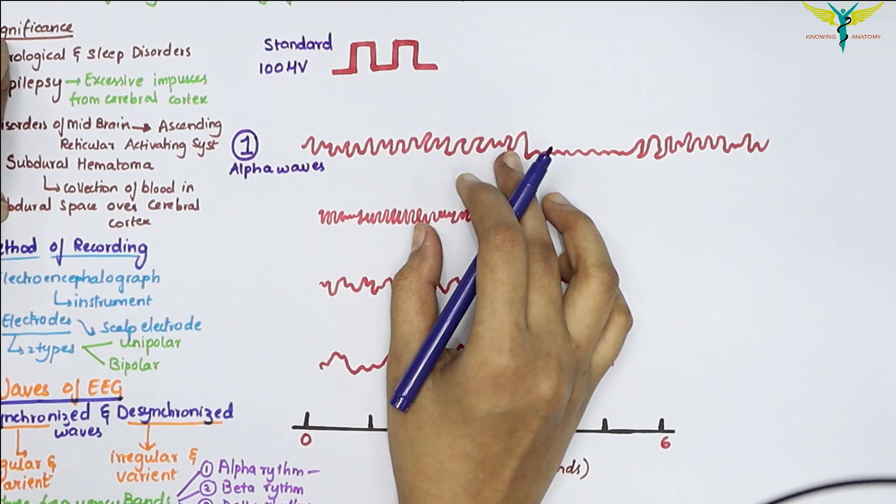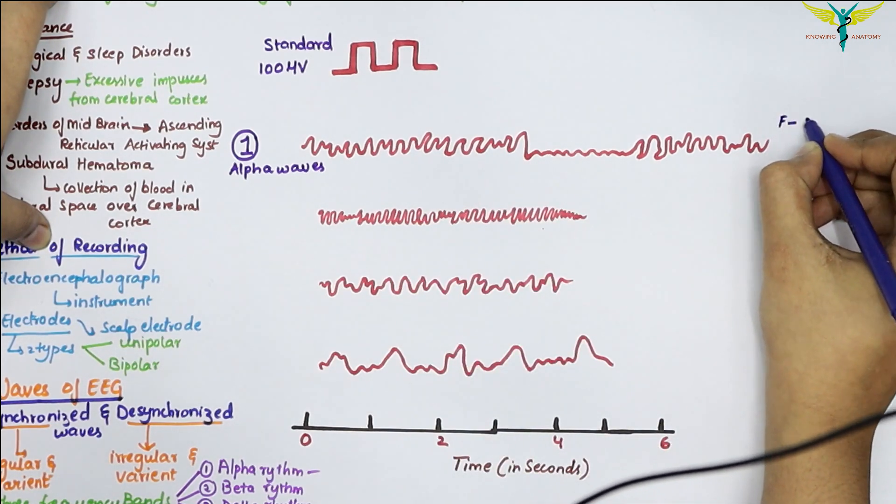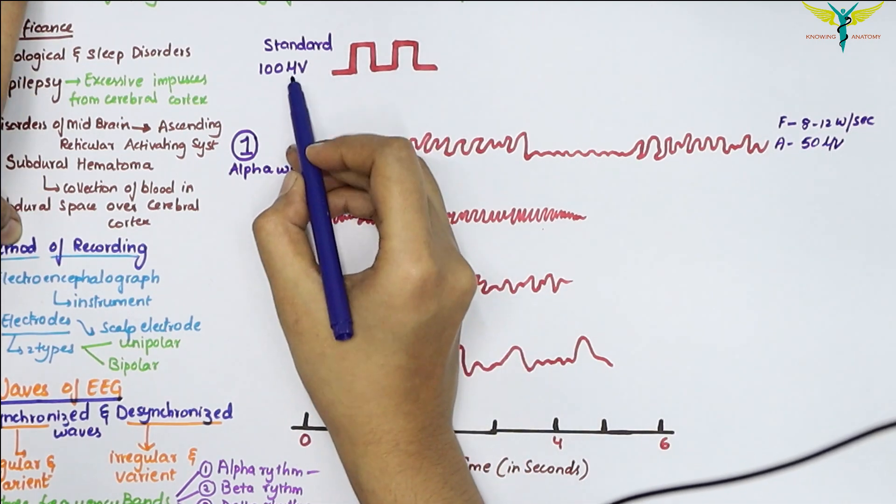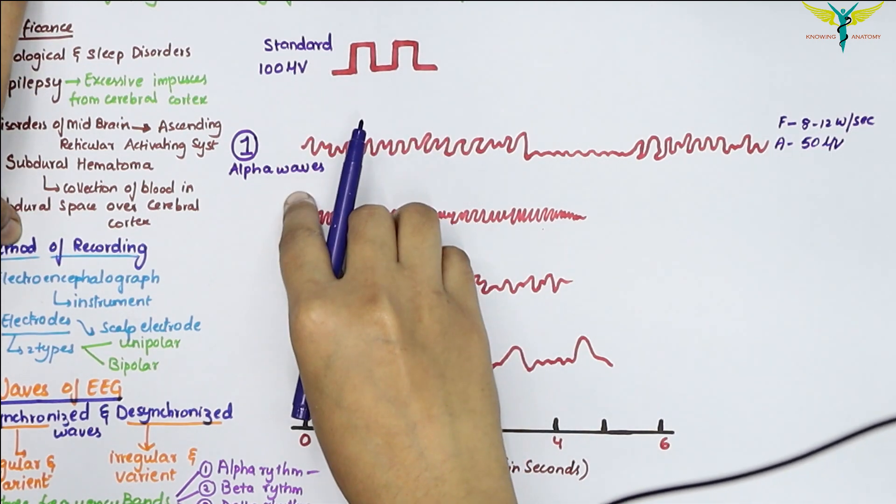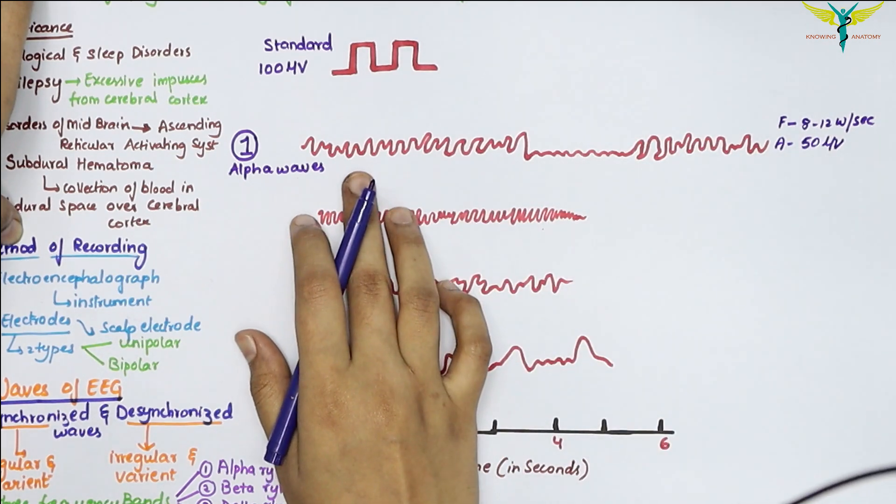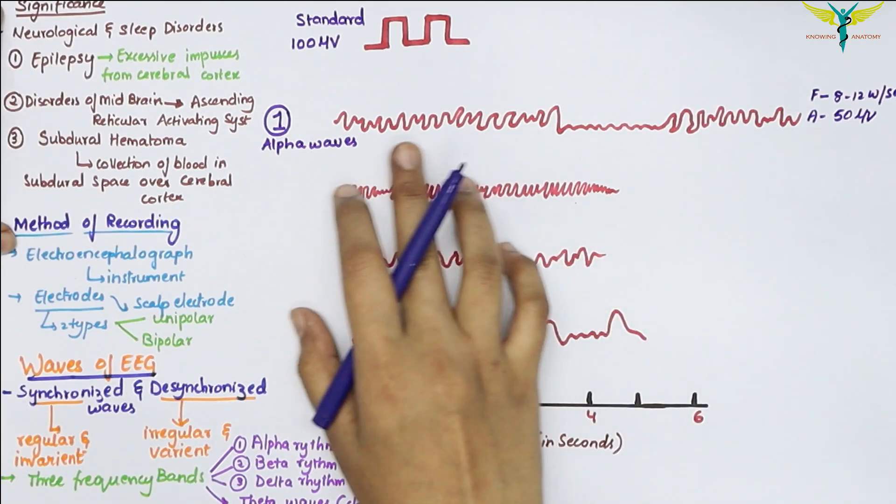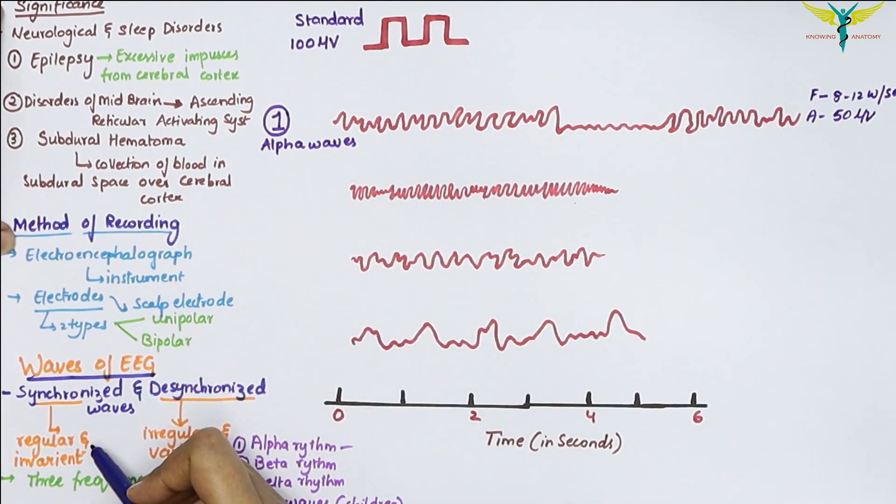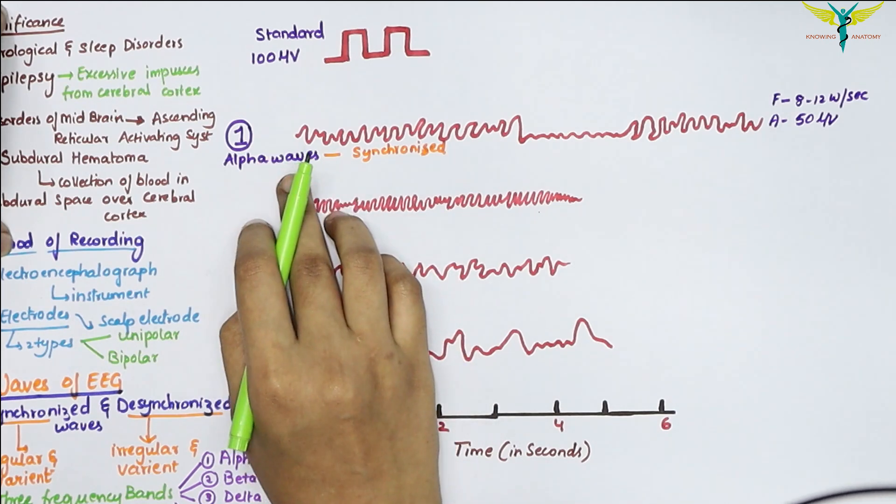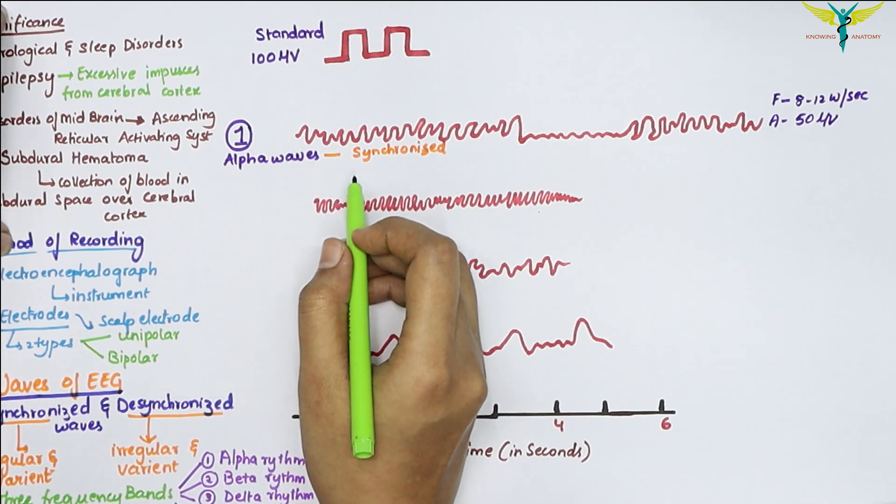The standard is 100 microvolts, and these alpha waves have an amplitude of 50 microvolts. The alpha waves are synchronized waves, meaning these waves are regular and invariant. The alpha waves are obtained in an inattentive brain or mind, as in drowsiness or light sleep or narcosis.